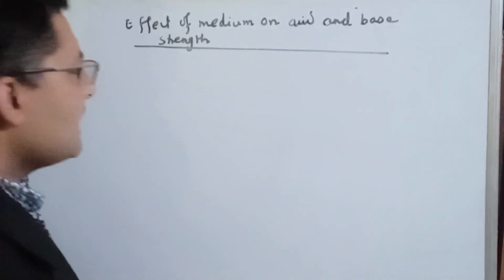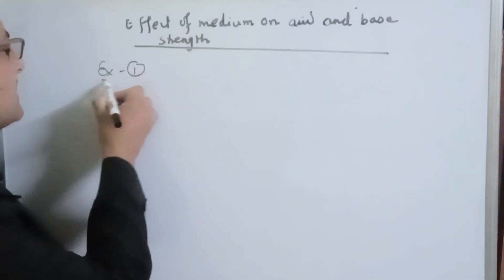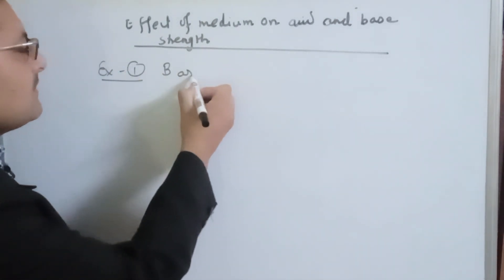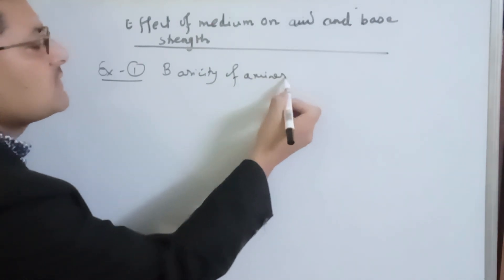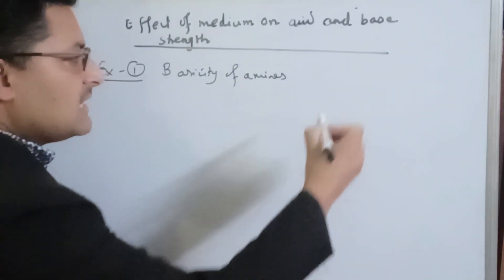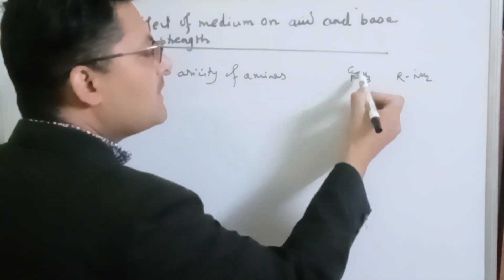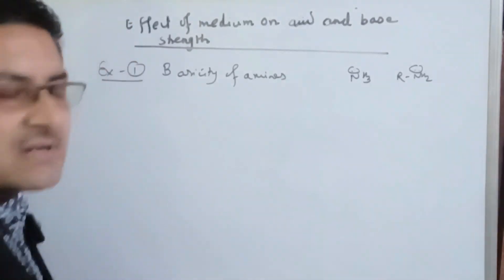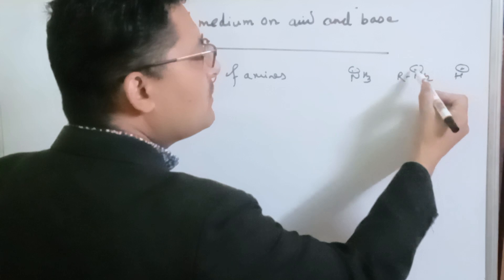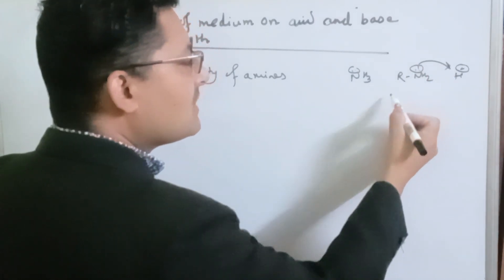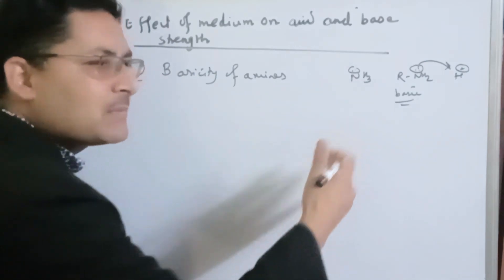We'll start with the first example: the basicity of amines. Ammonia and amines are known for having a lone pair. The lone pair can be donated, acting as a base. The basicity of amines depends on how readily this lone pair is donated.